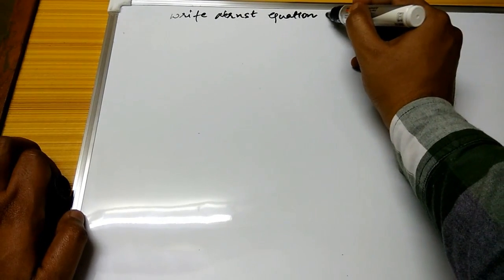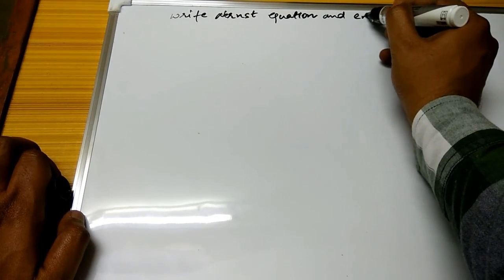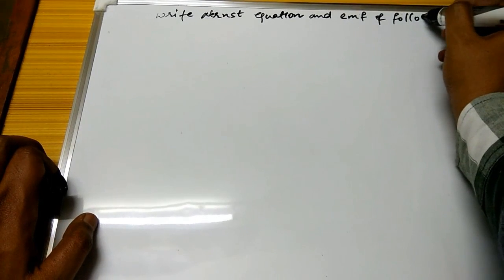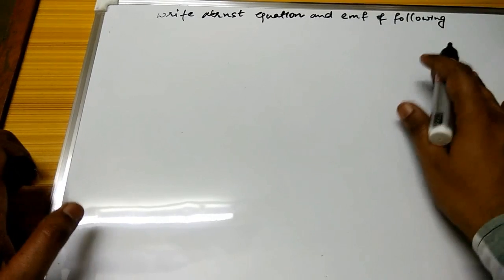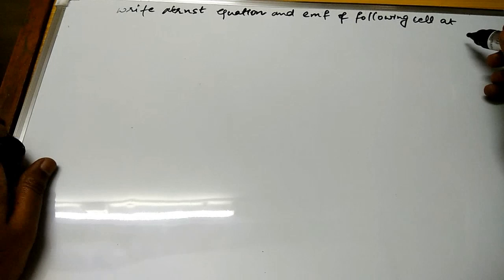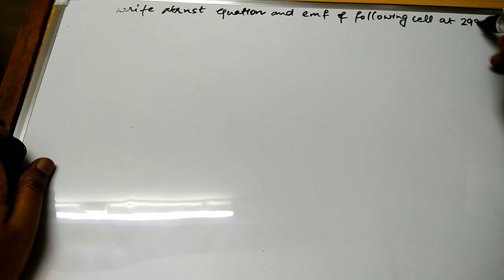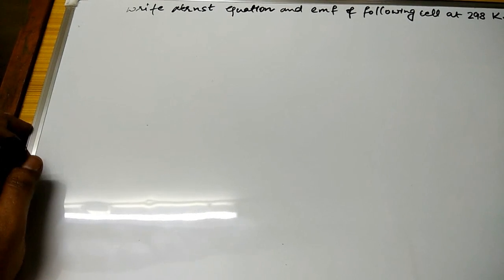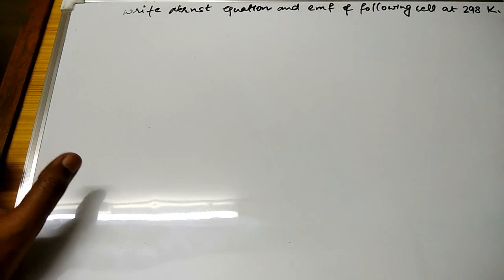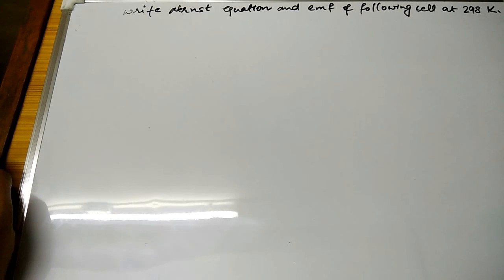Writing Nernst equation and EMF of following cell at 298 Kelvin. So I have told you earlier in my another video about Nernst equation that we have to take only temperature in Kelvin, not in Celsius, whose link I have given in the description you can check it also.